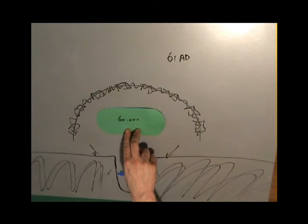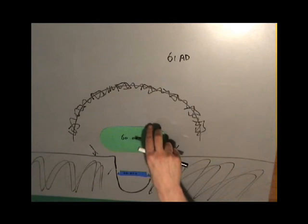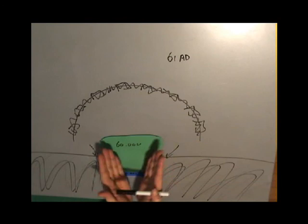Boudicca signals the attack and the entire force of 60,000 swarms against the Romans. When they come to this point, however, you already get some sort of bottleneck situation. The entire force is trying to get into this space. So this is already very crammed up.